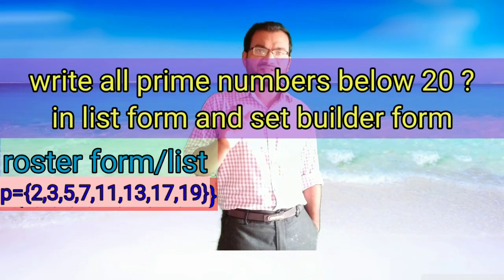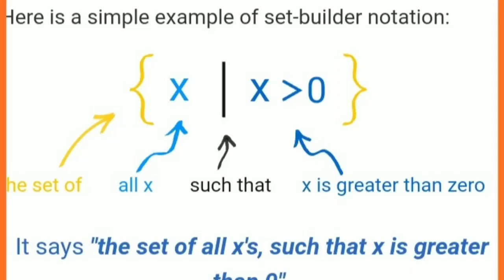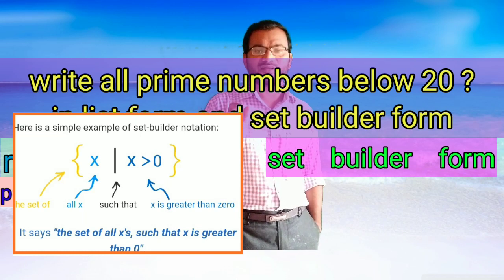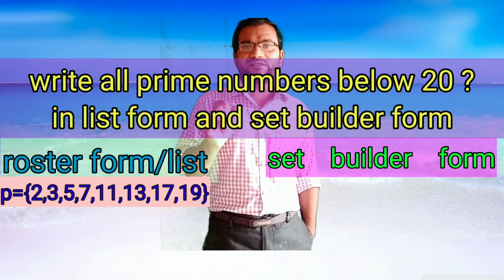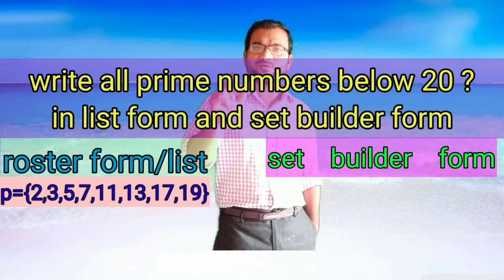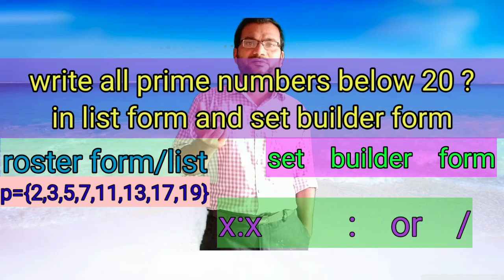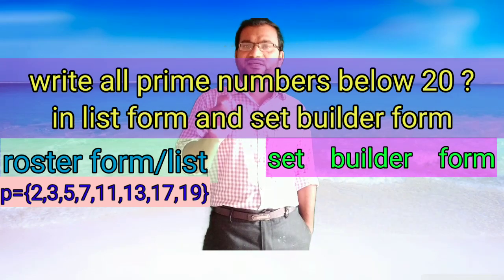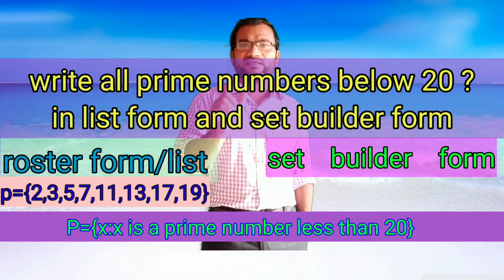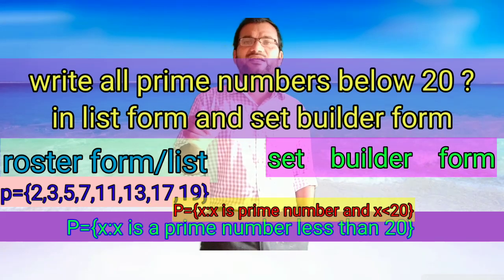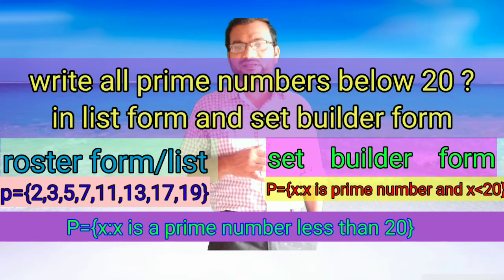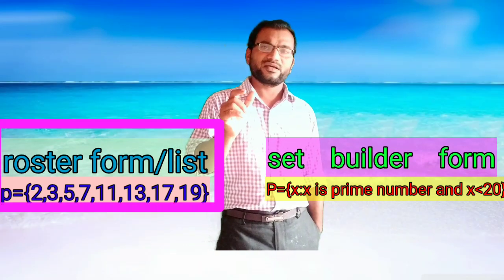Coming to set builder form for the same example, we use the notation with 'such that' and a common property. P = {x : x is a prime number less than 20}. You can also write it as P = {x : x is a prime number and x < 20}. Either way is acceptable.